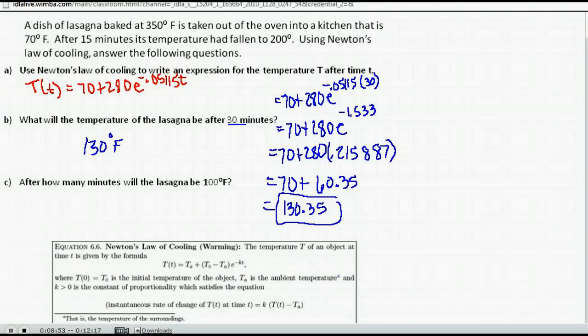I'm just going to round that off. So we took our formula we found in Part A, substituted the amount of time, 30, and found the temperature.